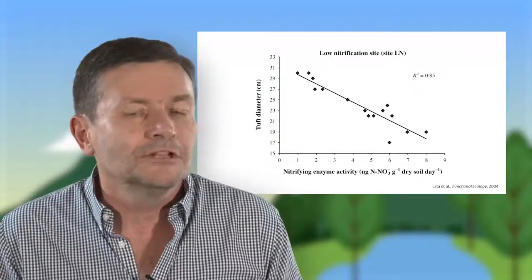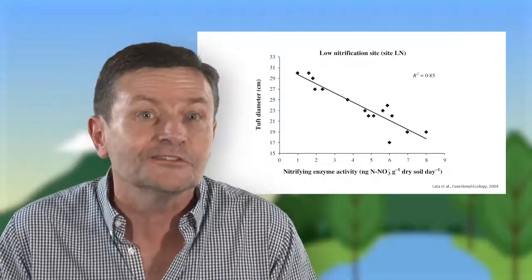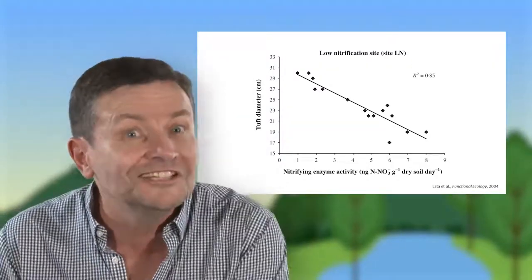La plante, qu'est-ce qu'elle gagne ? Elle gagne une meilleure nutrition azotée, parce que le nitrate, comme chacun sait, c'est un polluant. Si c'est un polluant, ça veut dire qu'il quitte l'écosystème.